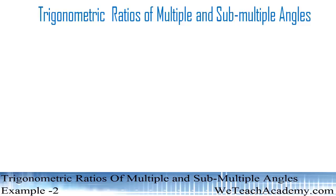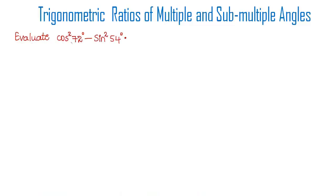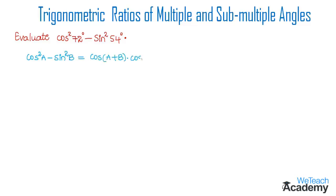Hello friends. In this section we are going to discuss an example on trigonometric ratios of multiple and submultiple angles. The given example is: evaluate the value of cos²72° - sin²54°. By observing, we can see this is in the form of cos²a - sin²b, which equals cos(a+b)·cos(a-b). Comparing both equations, a = 72° and b = 54°.